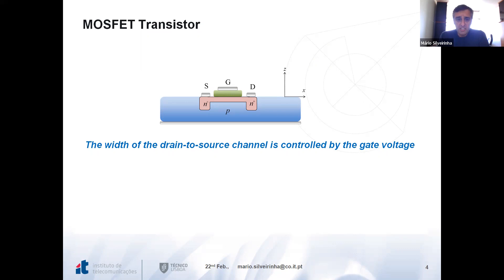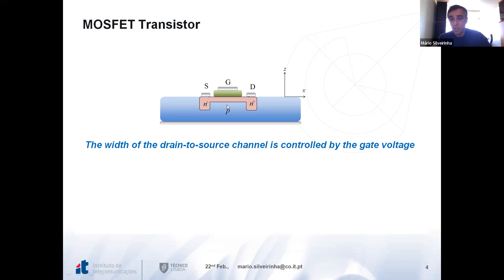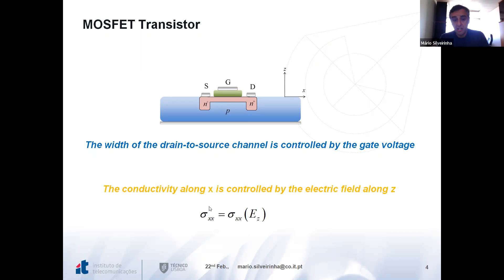The MOSFET transistor is a very simple device that enables powerful signal processing. It is based on a conducting channel with two terminals — the source and the drain — and you can act on the width of the channel, thereby controlling its conductivity, by acting on the gate. If you apply an electric field along Z, you tailor the width of this channel. In this manner, acting on the gate with the electric field along Z changes the conductivity along X.